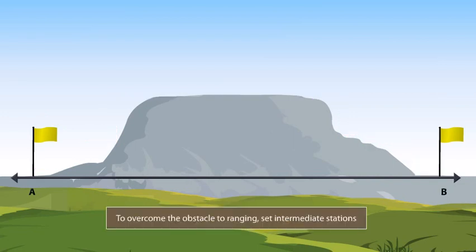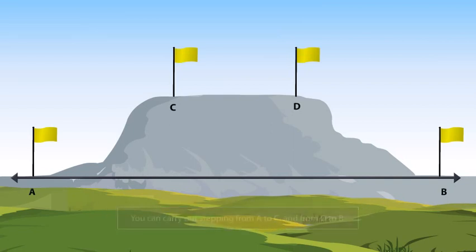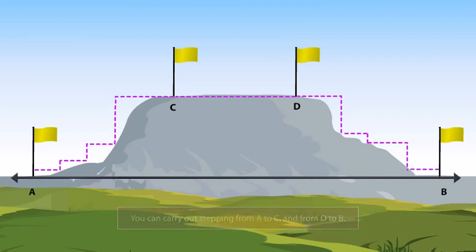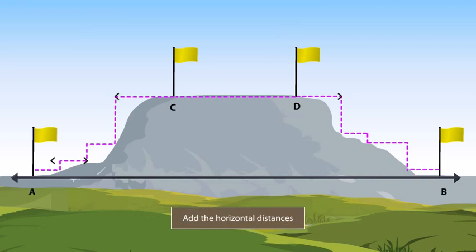To overcome the hill as an obstacle, set stations C and D between A and B. Ranging between A and B is obstructed by the hill, but you can carry out stepping with the chain from A to the intermediate station C, and from the intermediate station D to B. After that, add the horizontal distances of AC, CD, and DB to obtain the distance between A and B.